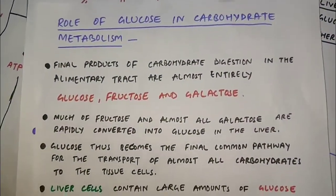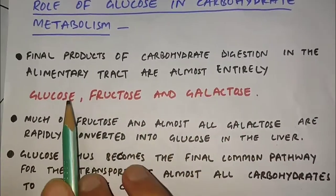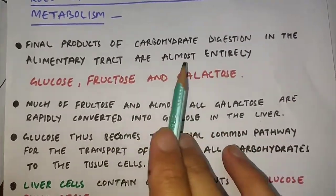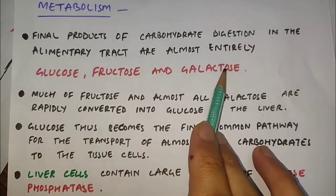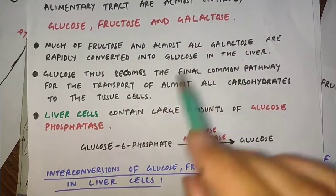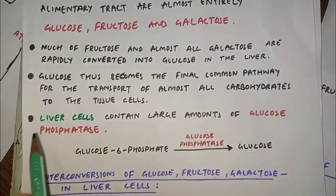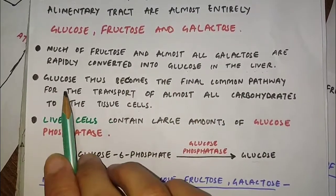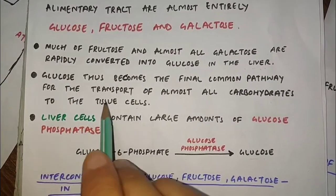Now let's come to the role of glucose in carbohydrate metabolism. The final products of carbohydrate digestion in the alimentary tract are almost entirely glucose, fructose, and galactose. Much of fructose and almost all galactose are rapidly converted into glucose in the liver. Glucose thus becomes the final common pathway for the transport of almost all carbohydrates to the tissue cells.